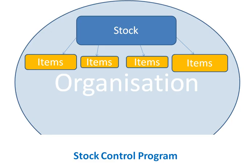So if we look at what stock control systems can do, the first thing is that a stock control program can keep details of the individual items that the organization holds in stock — actual relevant pieces of data on those items.